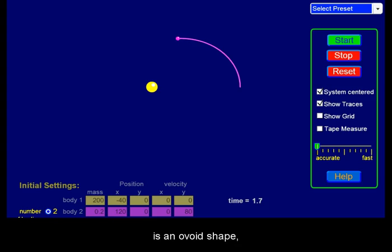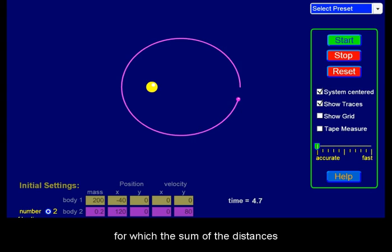An ellipse is an ovate shape defined as the locus of points for which the sum of distances from two foci remains constant.